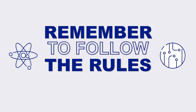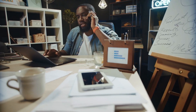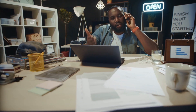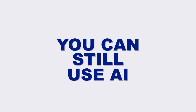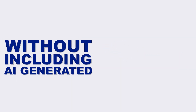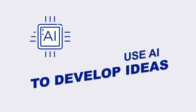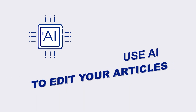Whenever you use AI, follow the rules and regulations set by the journals you want to submit to. If a journal says you can't have any AI-generated text, make sure you're following that. But you can still use AI without including AI-generated text — use it to develop ideas, get past writer's block, and even to edit your articles or find ways to make your writing sound more professional, without directly including AI-generated text in your article.